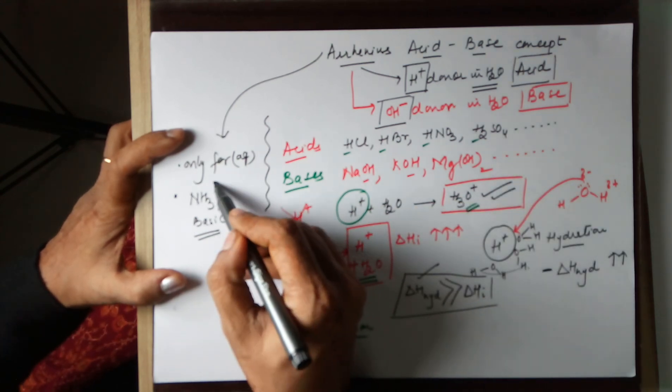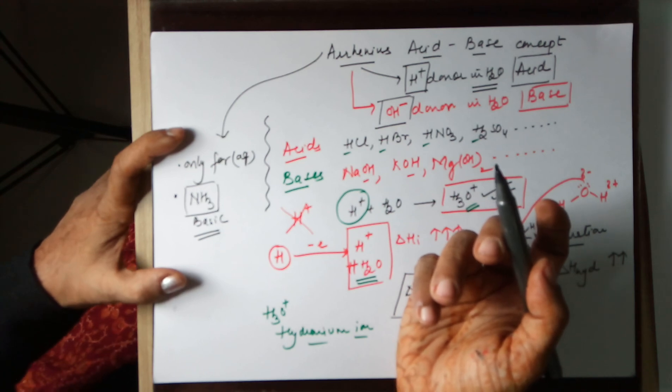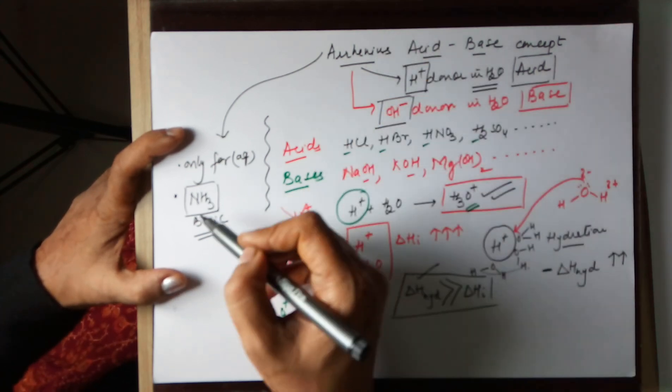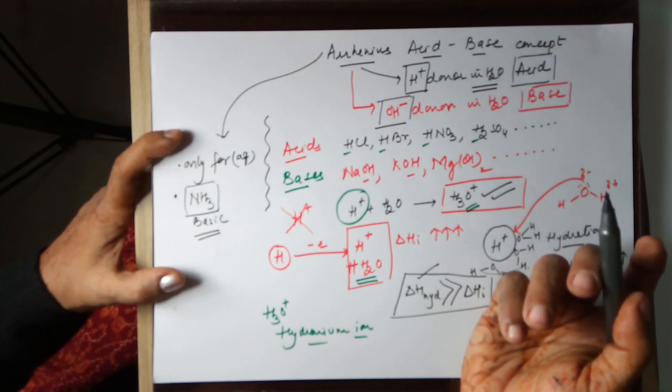Ammonia, as you can see, does not have any OH ion in it to be released. Hence, according to Arrhenius, ammonia cannot be a base. But we very well know that ammonia is a base.